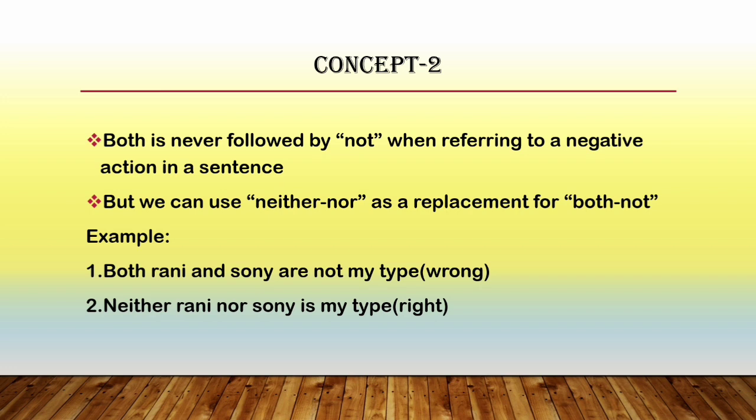To understand this concept, I have given two examples. In the first one you can see: 'Both Rani and Sony are not my type.' Since 'both' should never be followed by 'not', the first sentence is wrong. To get the same meaning, we replace 'both...not' with 'neither...nor'. So the second sentence, 'Neither Rani nor Sony is my type,' is the correct form and indicates the same meaning. This is the second concept of the second rule.